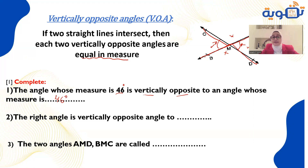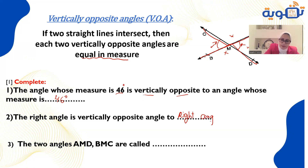A right angle is vertically opposite to a right angle, because vertically opposite angles are equal in measure.